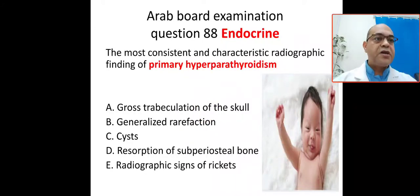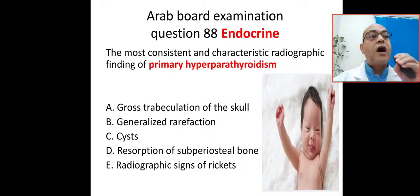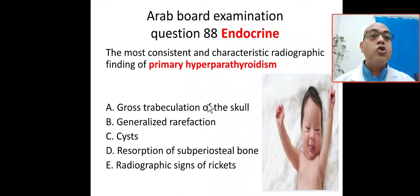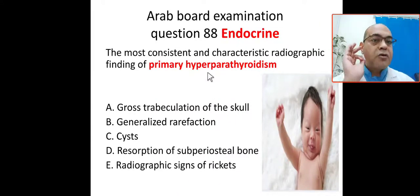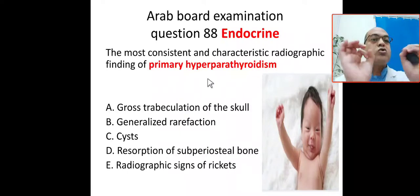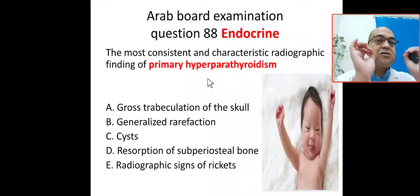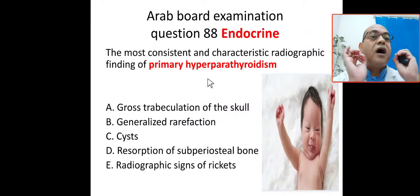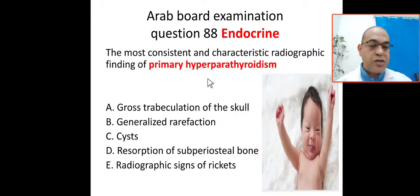Our question today is related to the endocrine section, common in the Arab board exam. The question asks: what is the most consistent and characteristic radiographic finding of primary hyperparathyroidism? We will go through the options one by one. Option A is gross trabeculation of the skull.